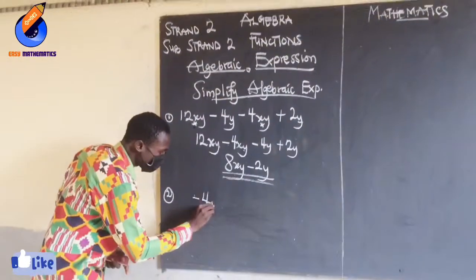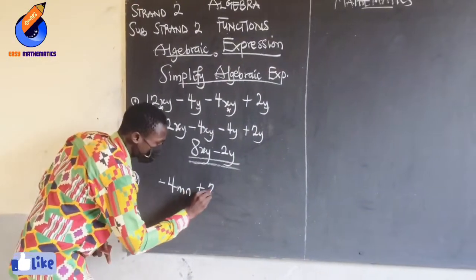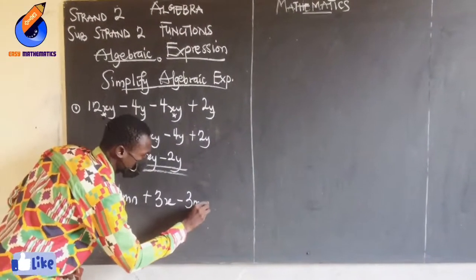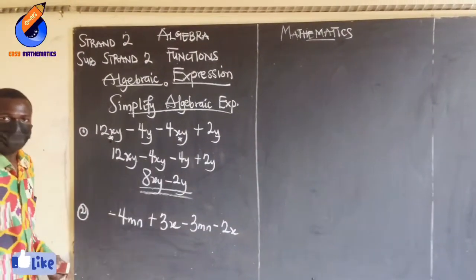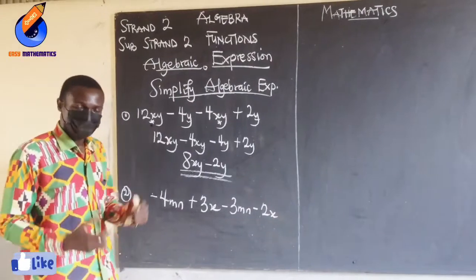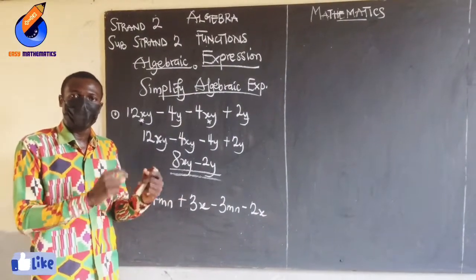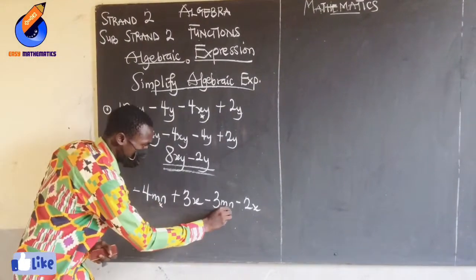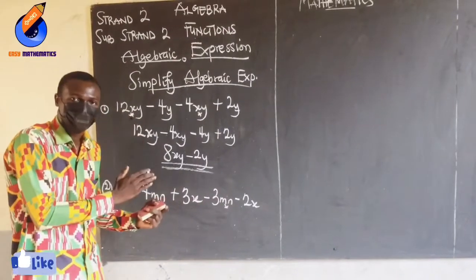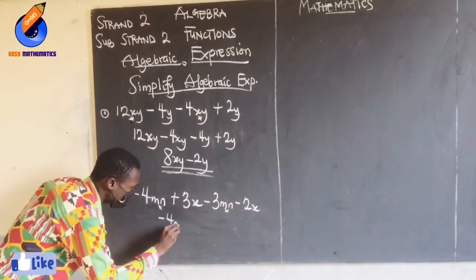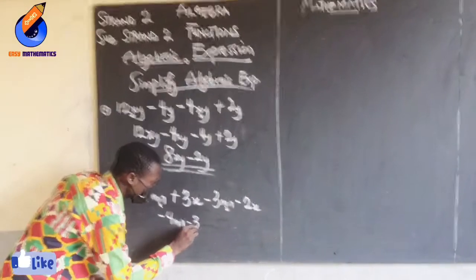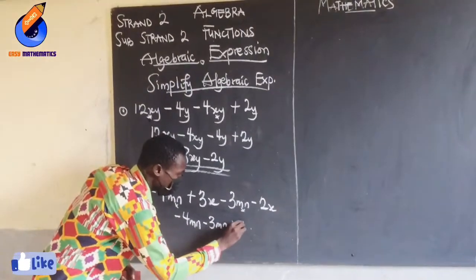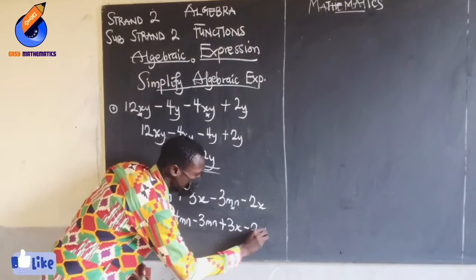Let's say negative 4mn plus 3x minus 3mn minus 2x. What do I have to do? I have to group my like terms. The like terms are the numbers having the same variables. So mn and mn are like terms — this gives me negative 4mn minus 3mn. Then x and x are like terms — so plus 3x minus 2x.